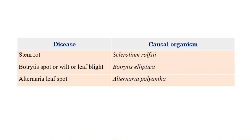In tuberose there are more than 10 to 15 diseases, but three are the most considerable and important ones. The first is stem rot, caused by Sclerotium rolfsii. The second is Botrytis spot, wilt, or leaf blight, caused by Botrytis elliptica. The third is Alternaria leaf spot, caused by Alternaria polyanthera.